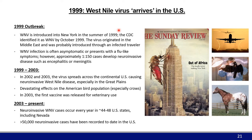From 1999 to 2003, West Nile spread through the continental US and established itself in most states. Case numbers are particularly high in the Great Plains states. It had a devastating effect on the American bird population, in particular crows, and can also infect horses — by 2003, the first vaccine was released for veterinary use, though we still don't have a vaccine licensed for human use. Since 2003, the virus is stably established in the US, with neuroinvasive cases occurring every year in the majority of US states including Nevada, and over 50,000 neuroinvasive cases recorded to date.